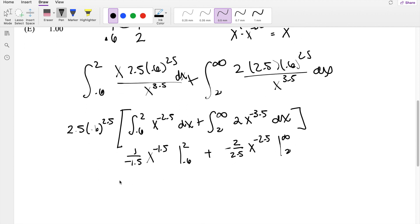The upper limit here is going to give you 1 over negative 1.5 times 1 over 2 to the 1.5, minus 1 over 0.6 to the 1.5, plus, or technically it's minus, minus 2 over 2.5 times 1 over a really big number, it's going to be 0, minus here, and here the 2, you're going to get, this is equal to 1 over 2 to the 2.5.